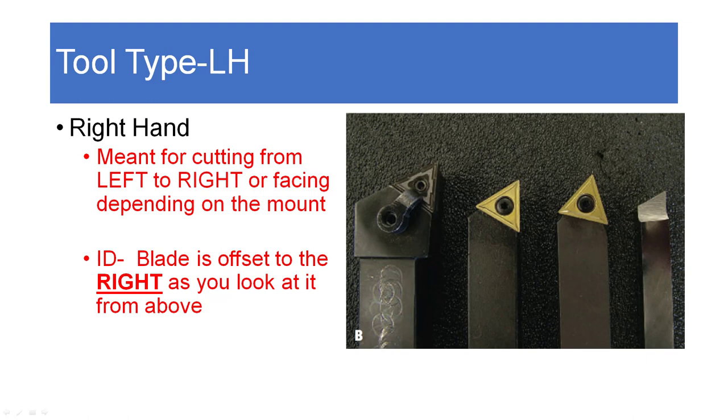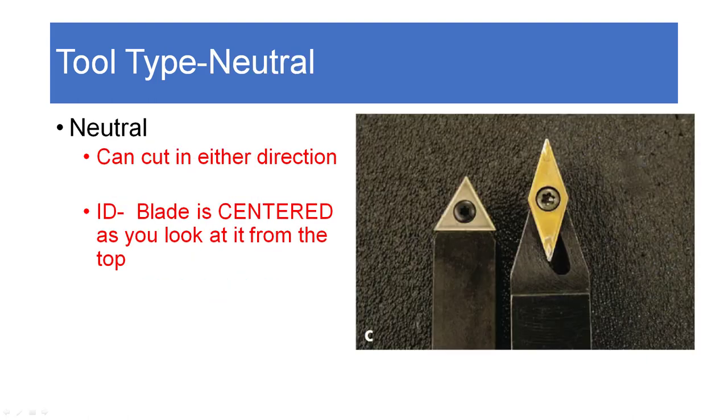If a right hand tool points to the left as you look at it, it makes sense that a left hand tool points to the right. A left hand tool is made to cut from the left to the right, or away from the chuck. We can identify it because the blade of the left hand tool points to the right. The last tool we can have is one that points in neither direction and it can cut either left to right or right to left. That is a neutral tool.